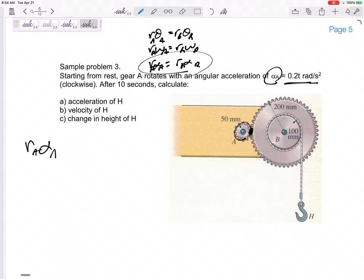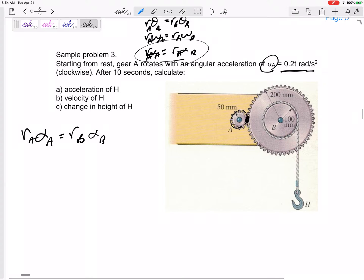So 50 times 0.2t equals 200 α_B, so α_B is going to be 0.05t. This is outer, this is also inner.